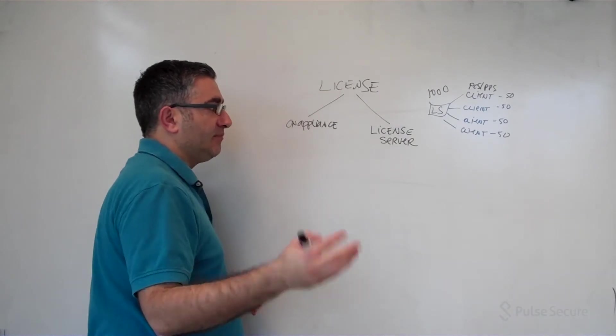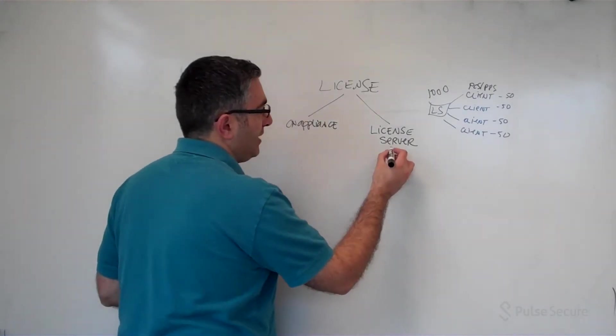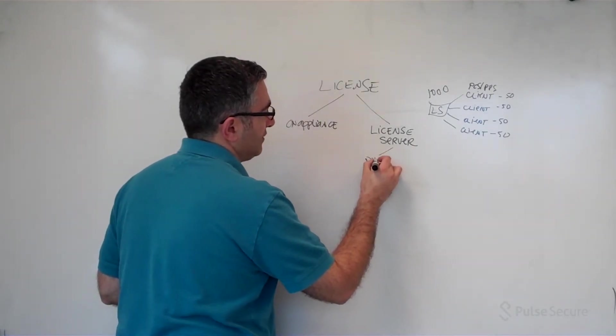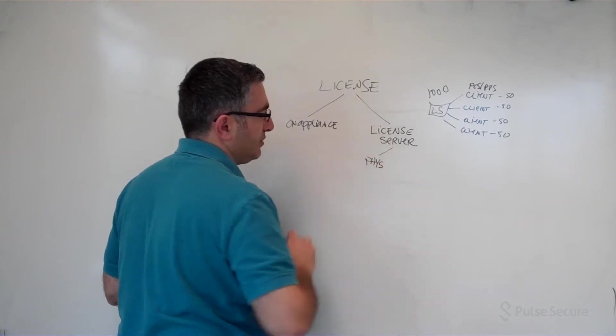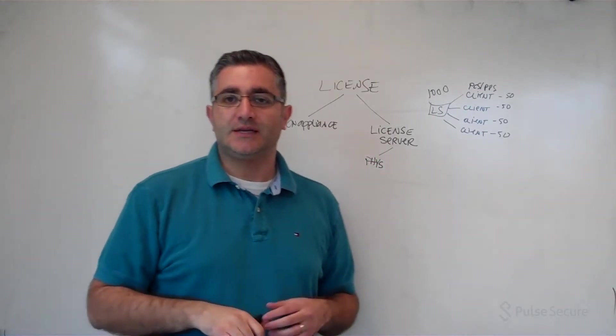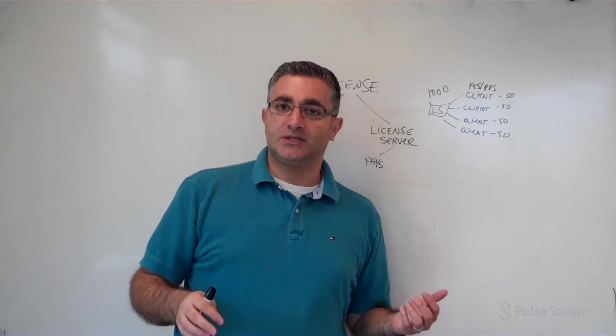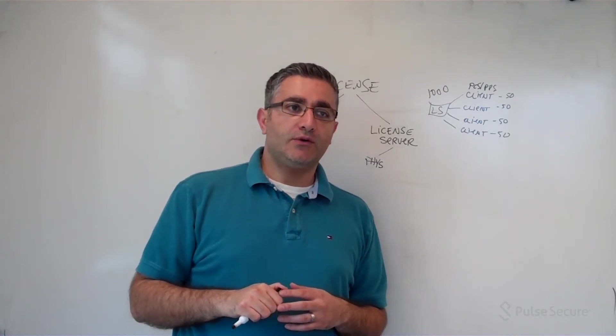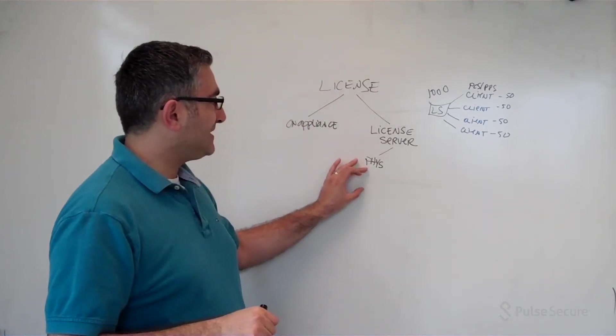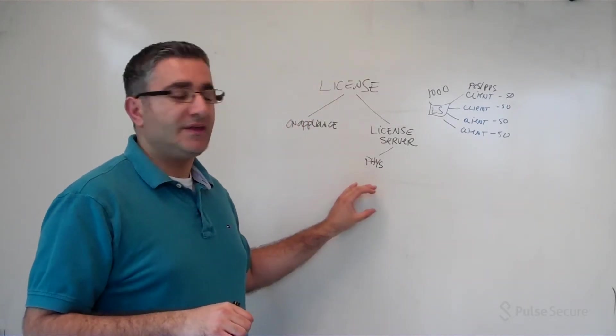Previously, before this release, what we had was a physical license server. You would actually purchase one of our low-end boxes, let's say a PSA 300 or PSA 3000 or a MAG 2600 for the older generation of hardware, and you would put all the licenses there, and then that would be your license server.